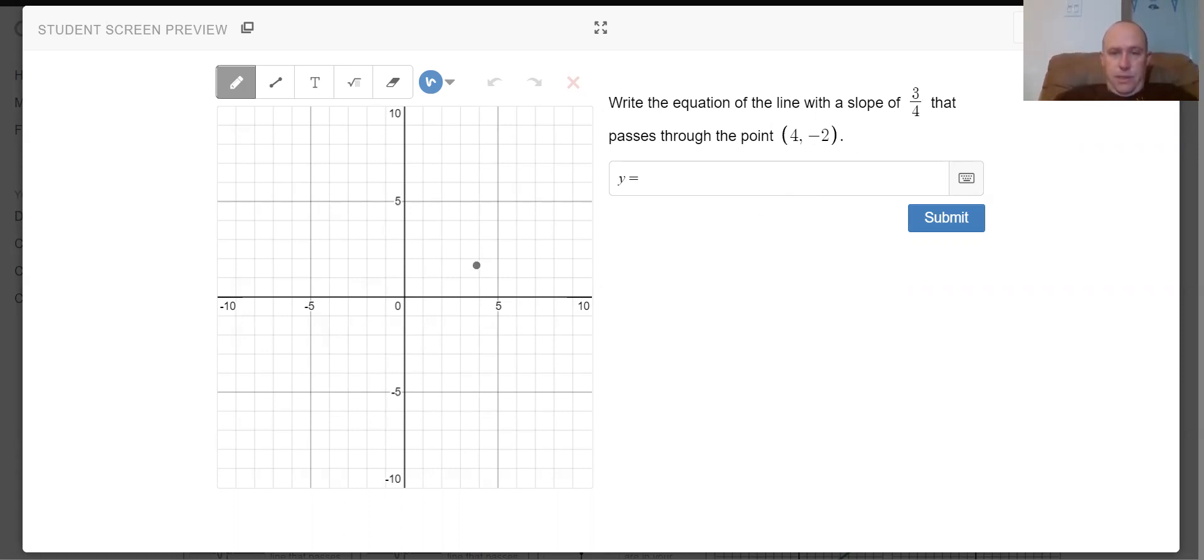Write the equation of a line with slope three quarters that goes through four negative two. So first I've got to find four negative two. There we go. And then a slope of three quarters. This is rise over run. So I'm going up three squares and I'm going across four squares.